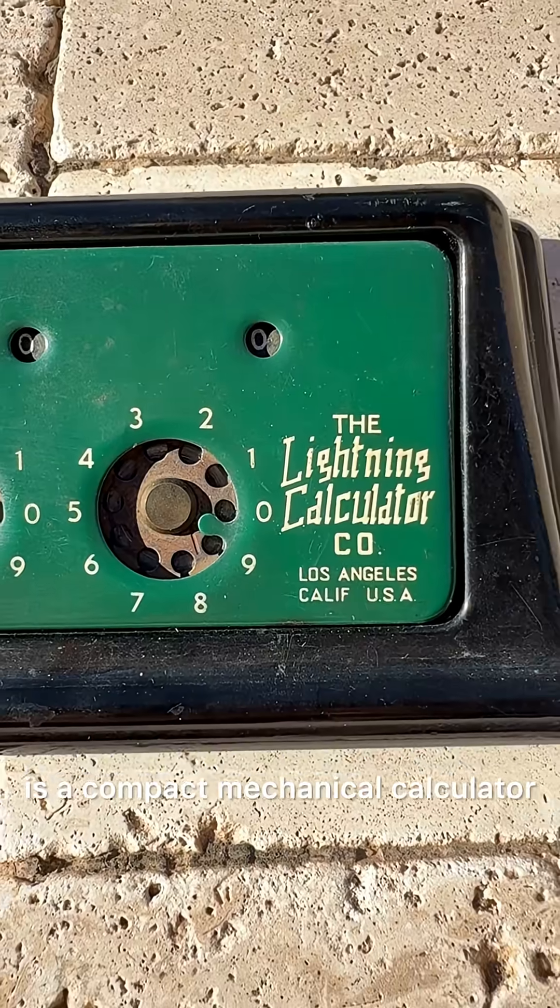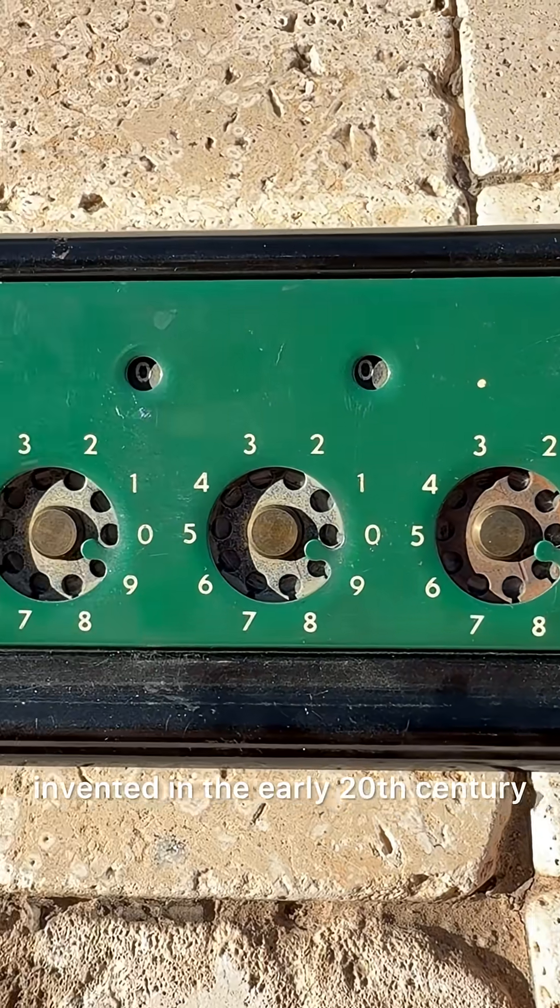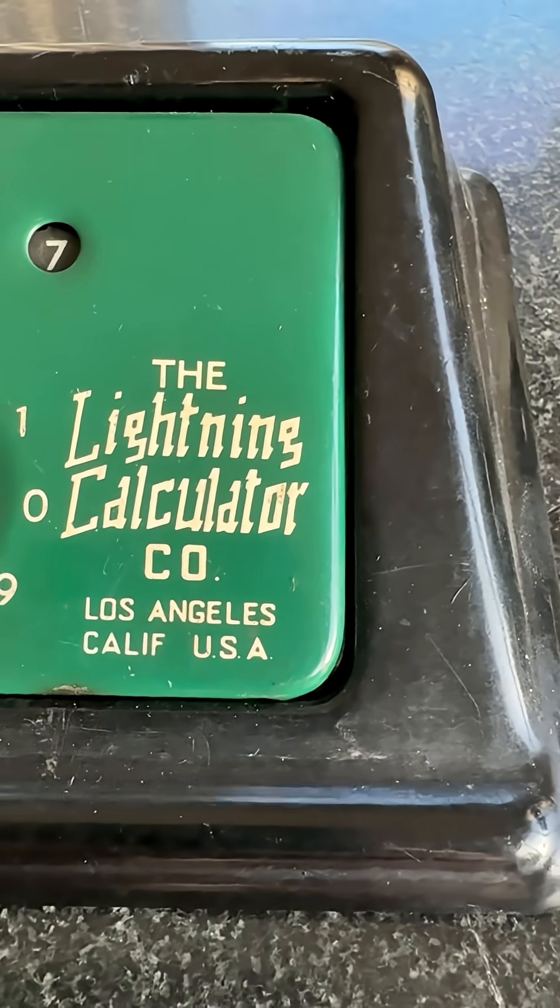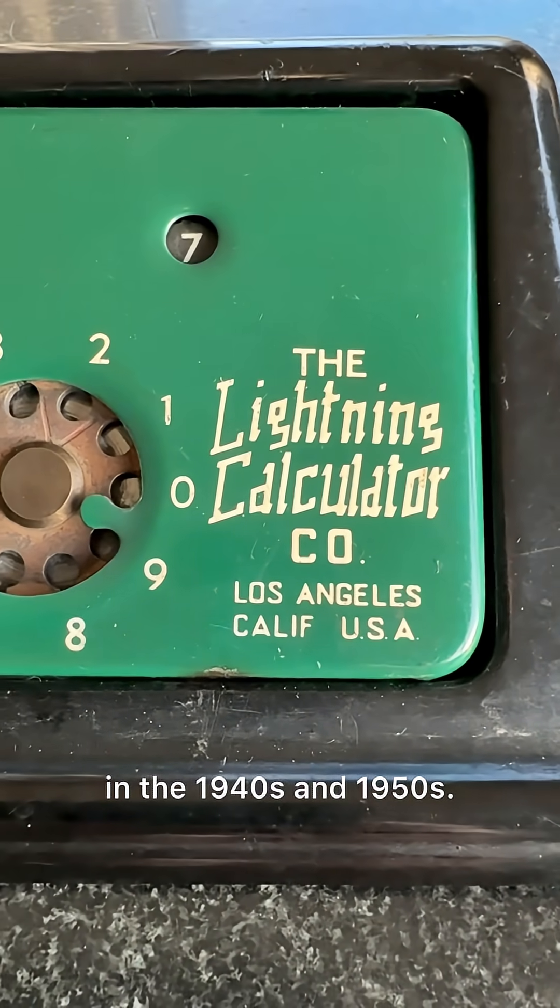The Lightning Adding Machine is a compact mechanical calculator invented in the early 20th century and became especially popular in the 1940s and 1950s.